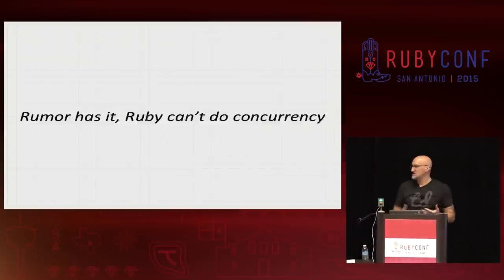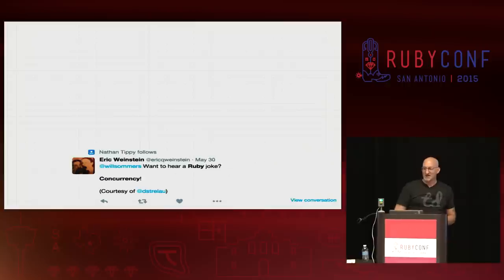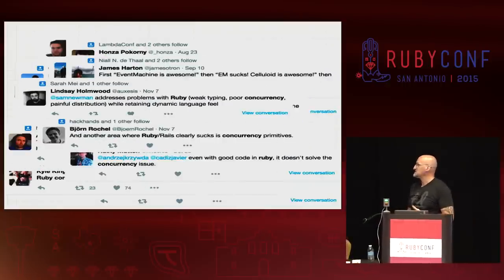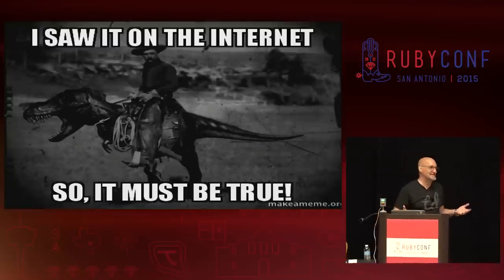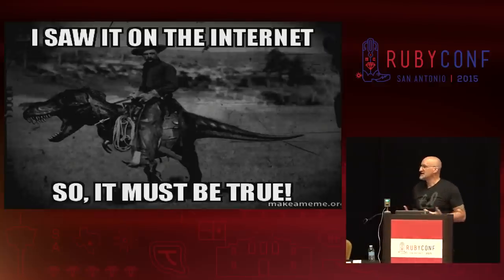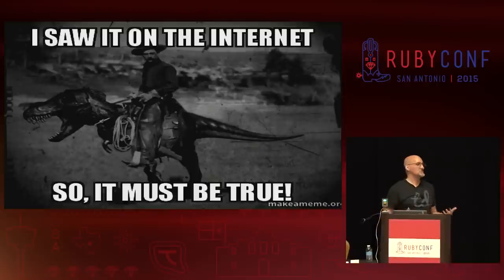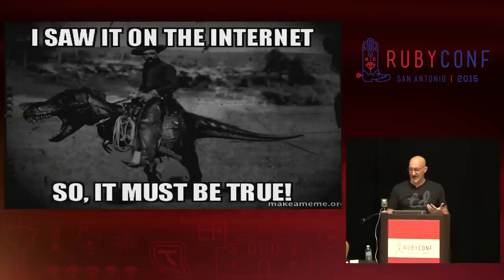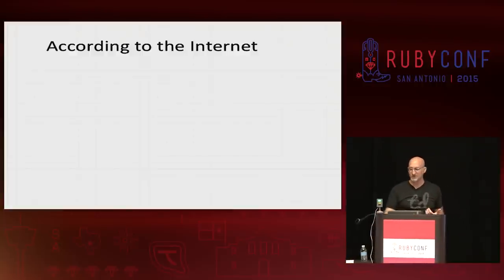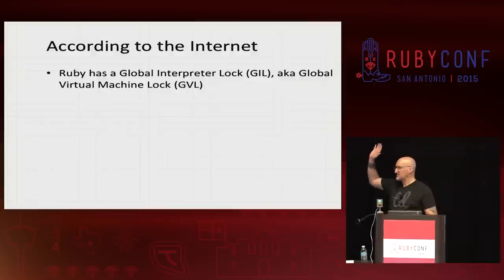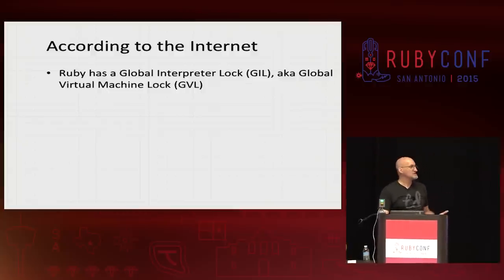For those of you who have not heard it, clearly you don't have Twitter accounts. Because if you follow Twitter, you will find that apparently Ruby cannot do concurrency. And if I heard it on the internet, it clearly must be true. So, being that I know how to Google and use the internet, I thought, before I give this presentation about the GIL, how about if I actually look up a few factoids? So let's talk about what this thing the GIL is — I did some Googling and came up with a couple of factoids.